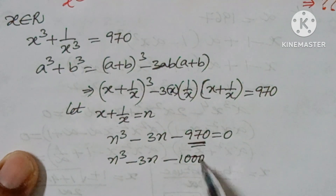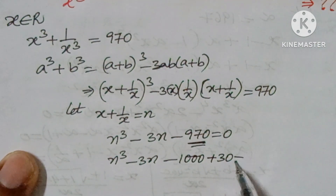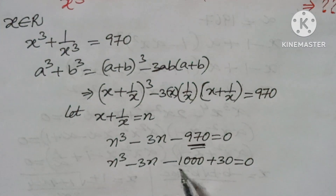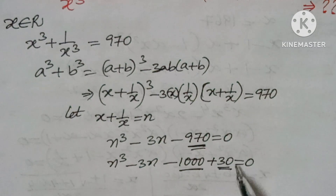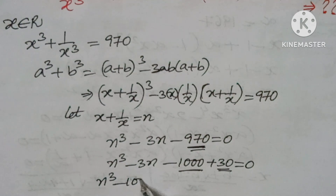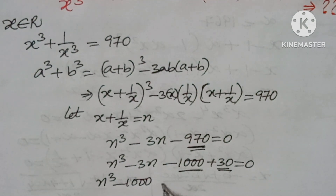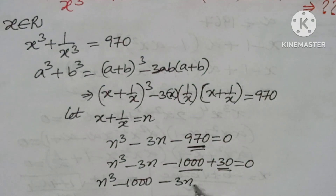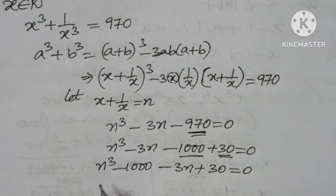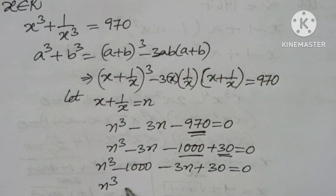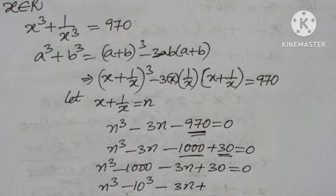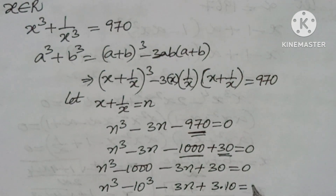Here we do some adjustment: we write 970 as 1000 − 30, so the equation becomes n³ − 3n − 1000 + 30 = 0, which can be rewritten as n³ − 10³ − 3n + 3·10 = 0.